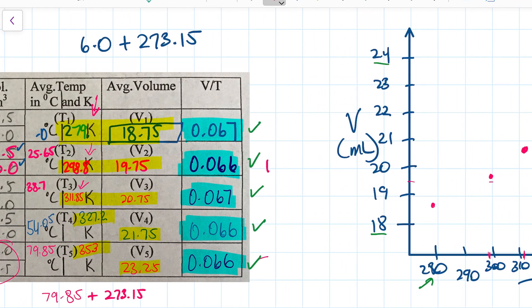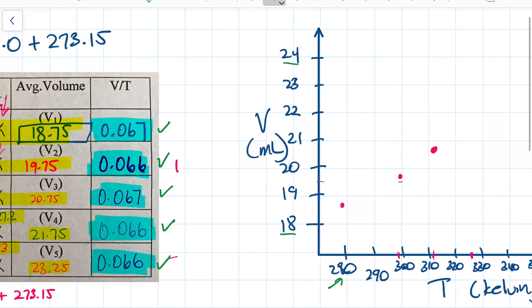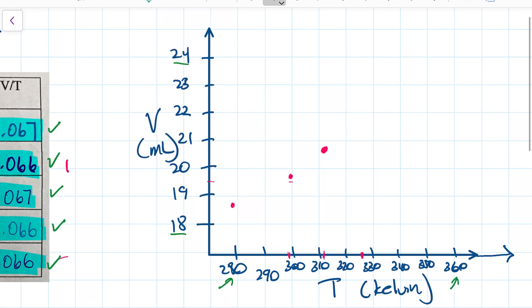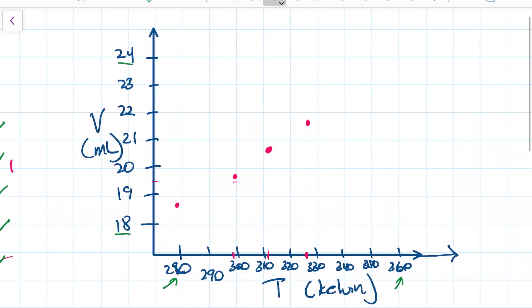And then my next one is 327.2. We're going to round down to 327 with 21.75. 327 would be about here, with 21.75 about here.